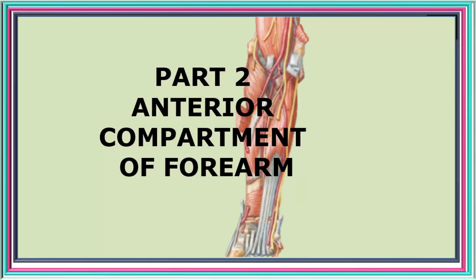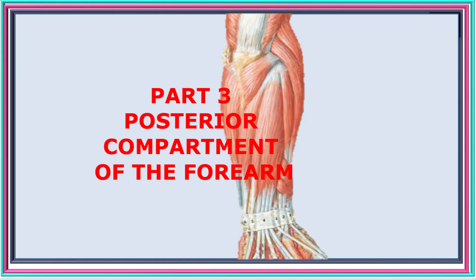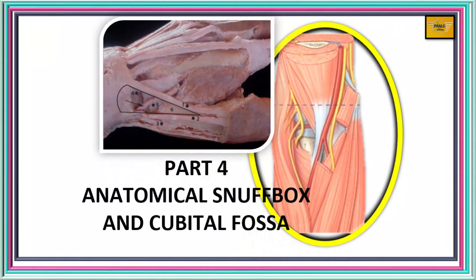This is part two in our series of lectures on the muscles of the forearm. We have divided this lecture series into four parts. Part one and two are on the muscles of the anterior compartment. Part three is on muscles of the posterior compartment, while part four is on the anatomy of the anatomical snuffbox and cubital fossa. So sit tight, let's go to class.